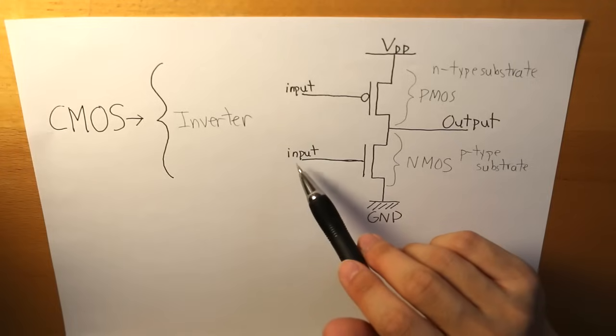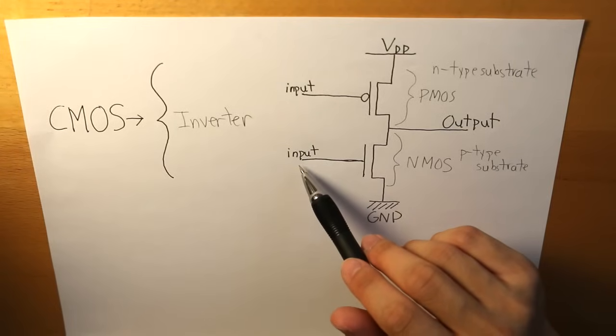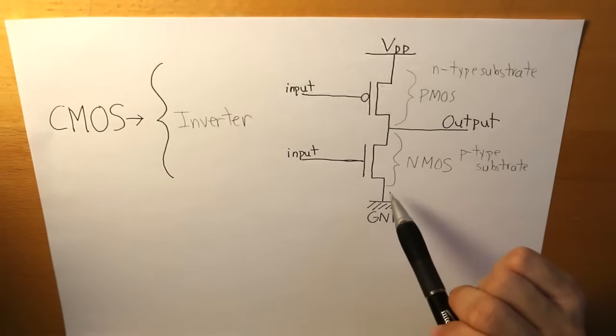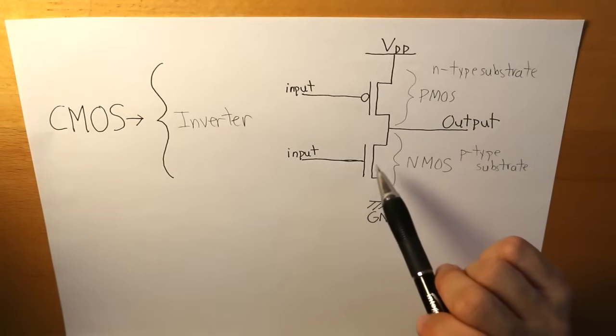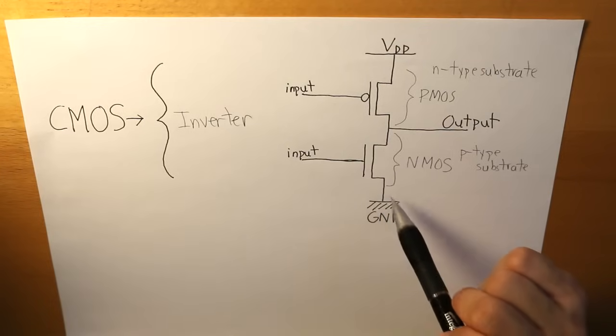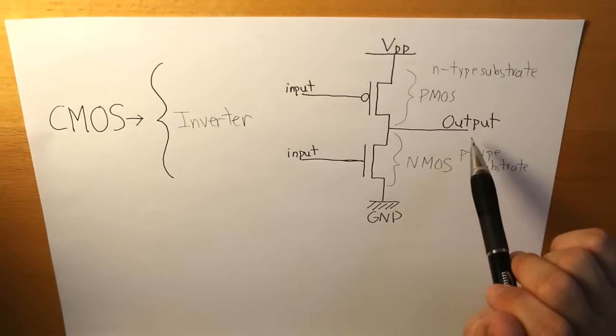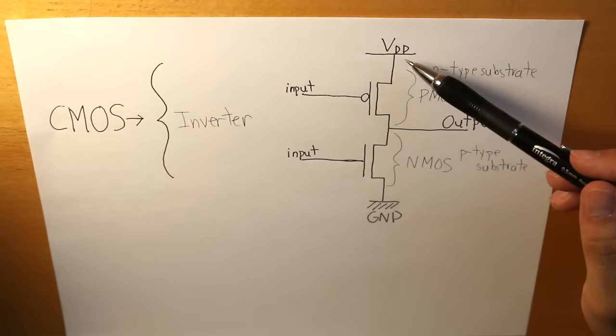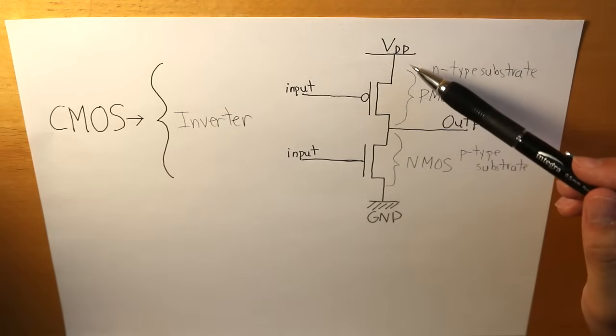For the NMOS, the input is low, so the transistor for that is going to be open, it's turned off. So the ground does not travel to the output, therefore the output is going to give us high or the magnitude of what the voltage is.